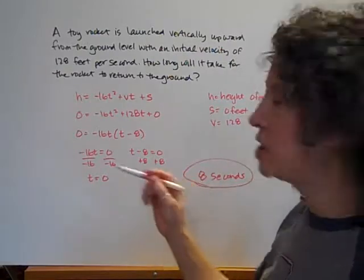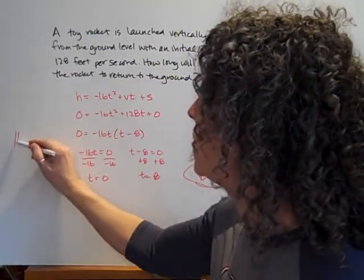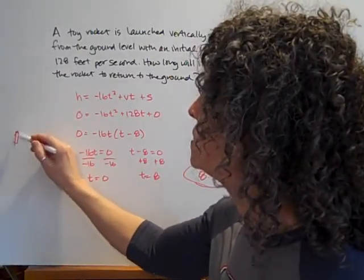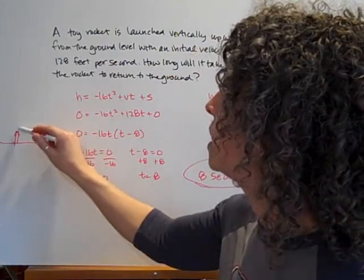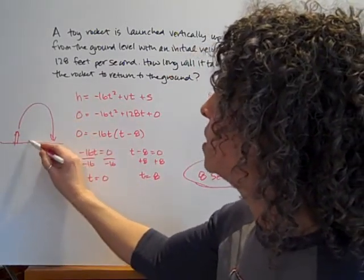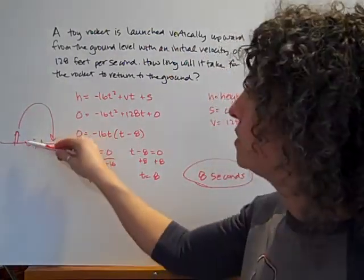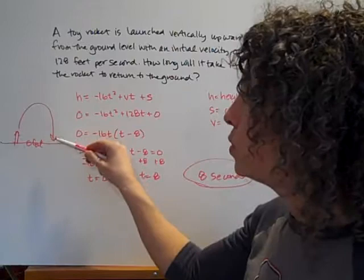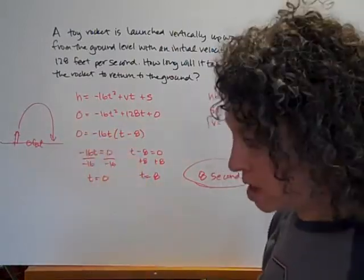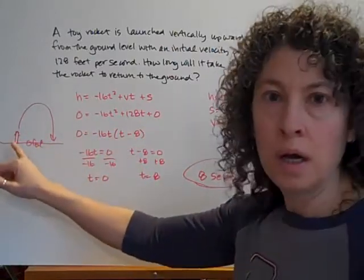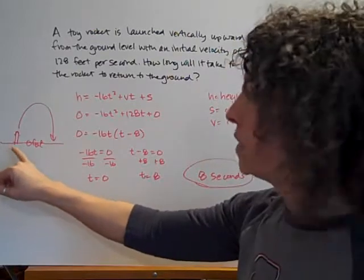So I actually like to draw a picture for each of these. So if I've got my little toy rocket here it's go I've got it on the ground it's gonna go up and it's gonna come back down again. So here is my zero feet. My ground level. Okay so my rocket is starting on the ground. I'm wondering when it's gonna come back to the ground.